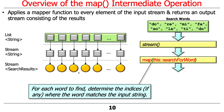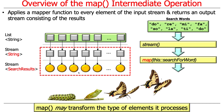Here's a simple example from our simple search stream program. We take the search words for a given input string and we're going to map those search words using the searchForWord method, which will find where — if anywhere — in that input string a given search word appears. searchForWord is applied to every element of the search word's input stream. Map may transform the type of elements it processes — in this case it does. Map takes in a stream of strings (the words to search for) and turns them into a stream of search results.